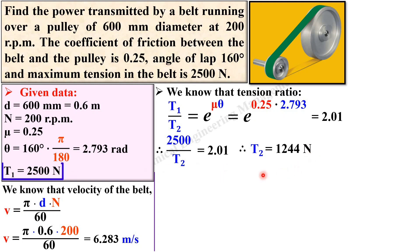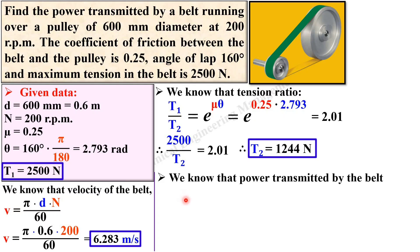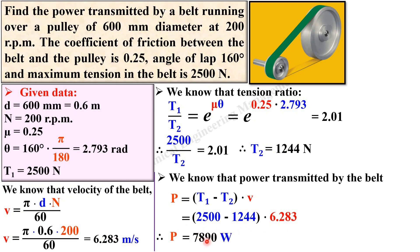Now you have the T1 and you have the T2, and our objective is to find the power transmitted. So again you know that power P is equal to (T1 minus T2) into v. So now you have T1, T2, and velocity v, so you can put it over here so that you will get the power. T1 is equal to 2500, T2 is equal to 1244, and velocity 6.283. So simplify, and you will get P is equal to 7890 watt.